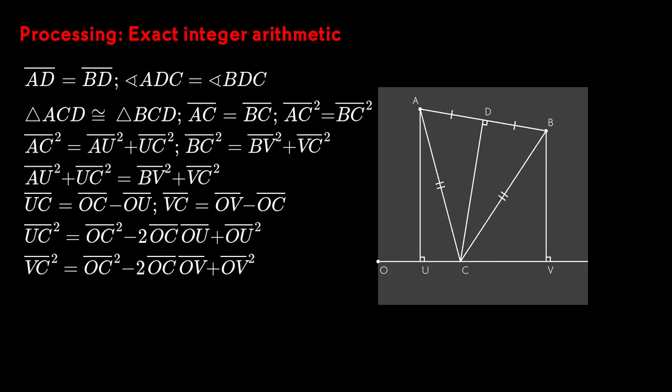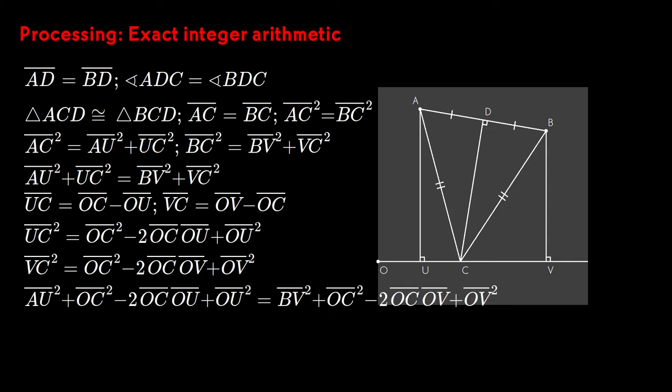Place the point O at the left edge of the row. The X coordinates of the feature points are the lengths of the segments OU and OV, and the X coordinate of the intersection is the length of the segment OC. We can subtract these coordinates to give us formulas for UC and VC, and square both sides of the equations. Substitute these formulas into the equation above. The two squares of OC cancel out.